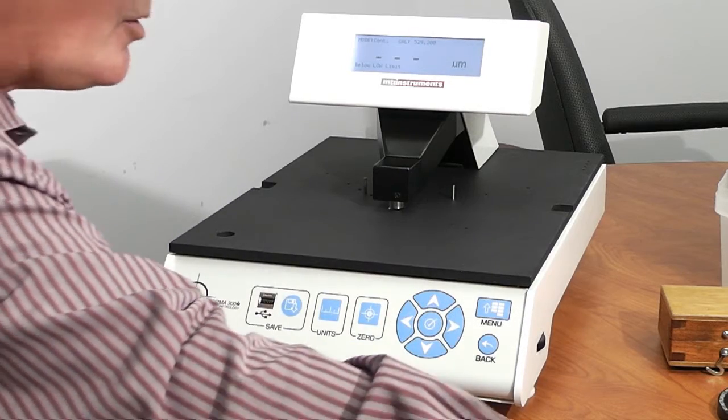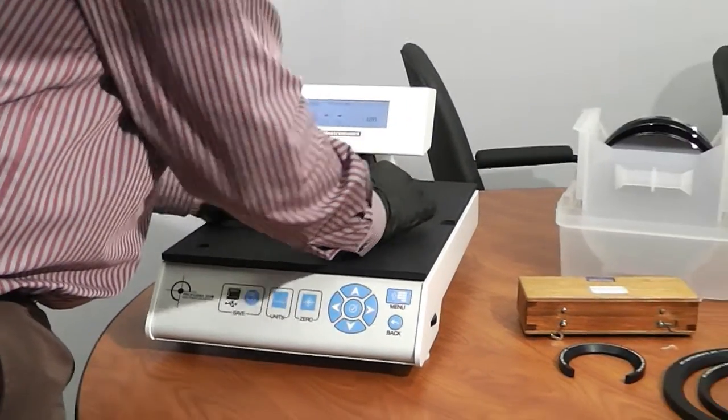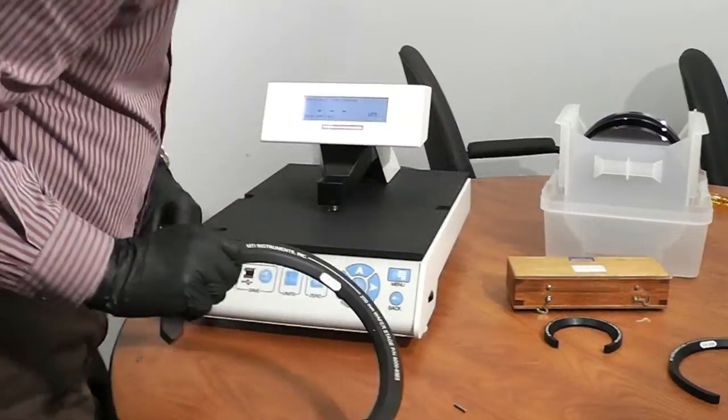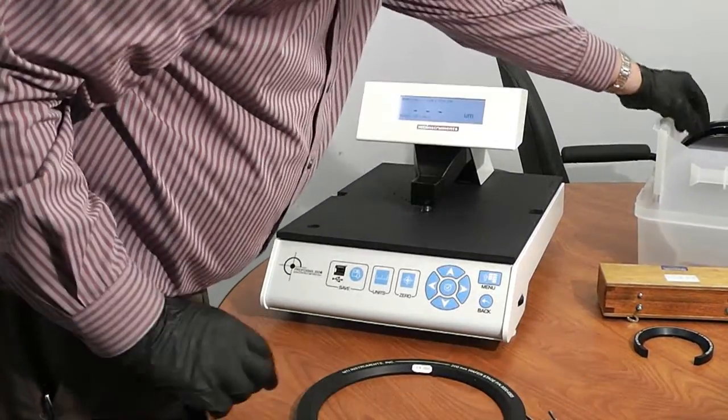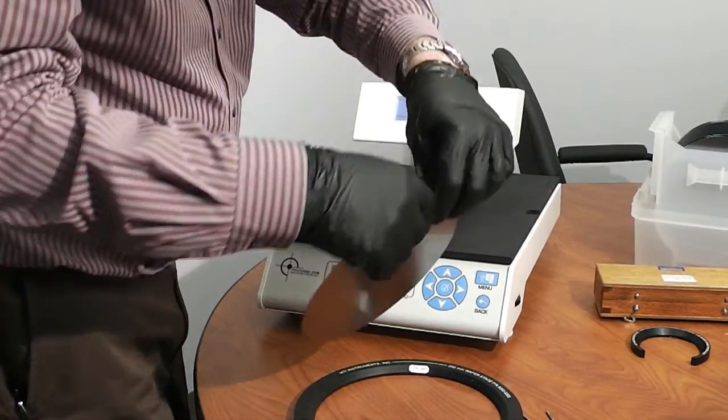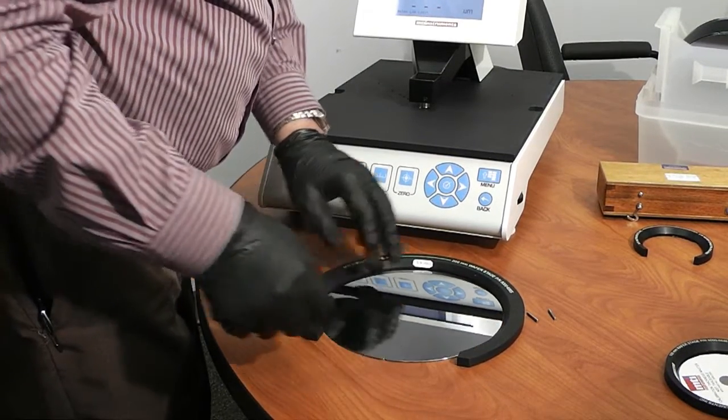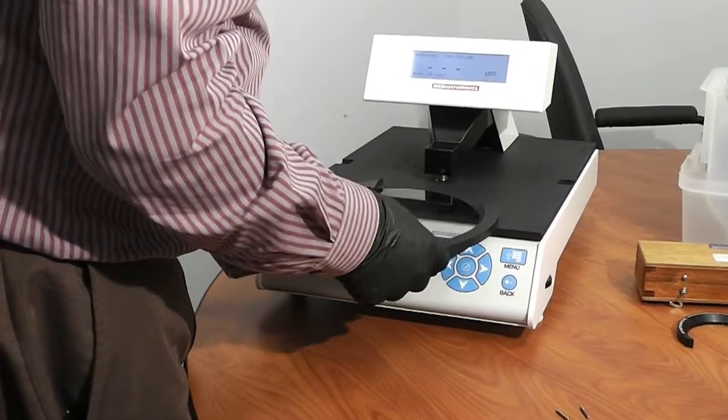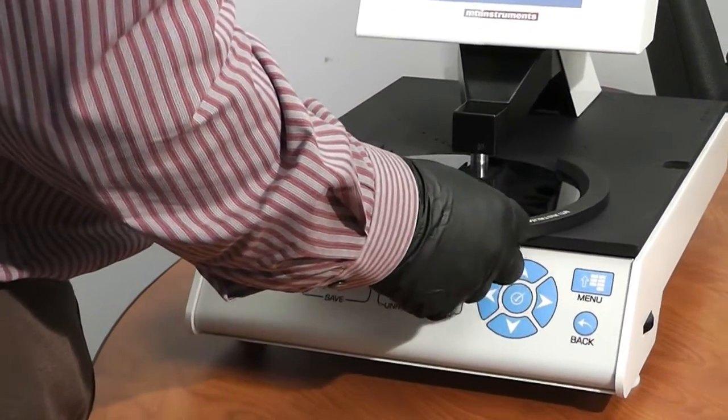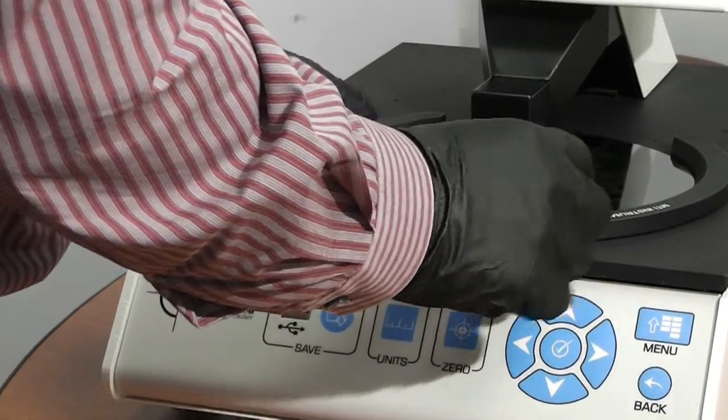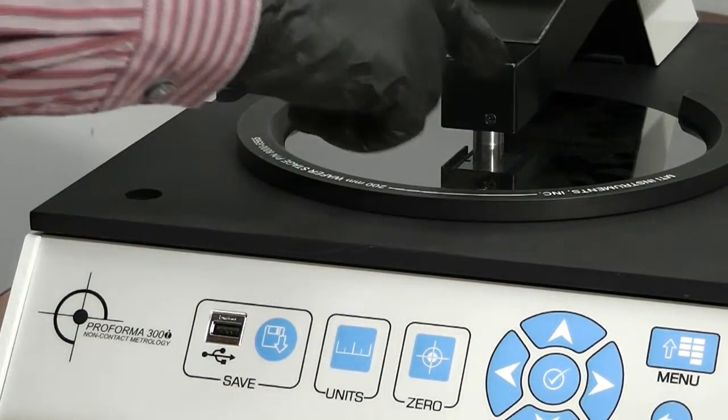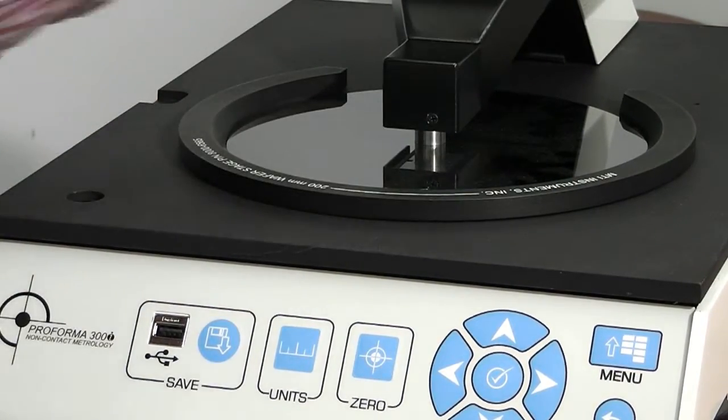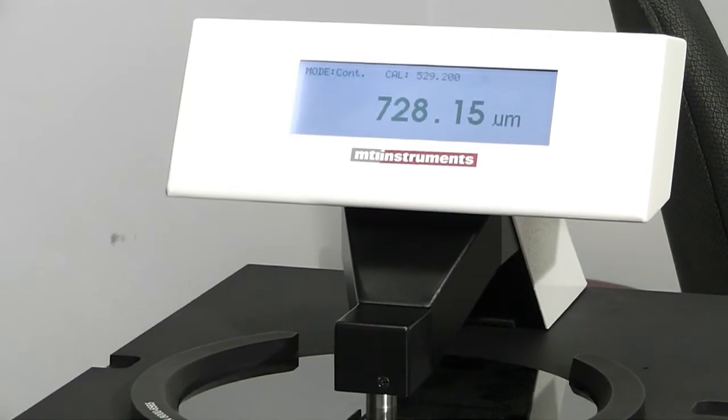And next we'll measure a 200-millimeter wafer. We have a 200-millimeter wafer ring that we're using here. All right, and what I should do is put the pins in to center this, but for brevity here, we're just going to look at the center here. And we can see that this one is 728.15 microns.